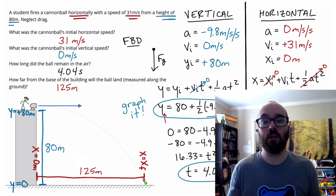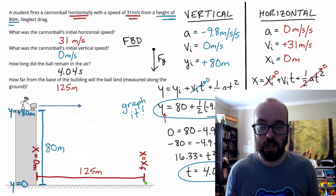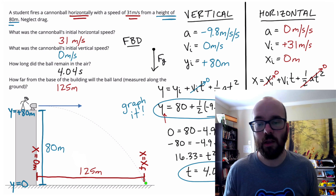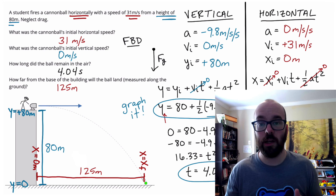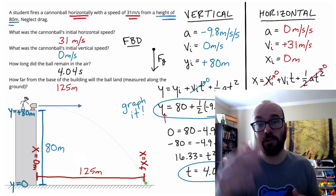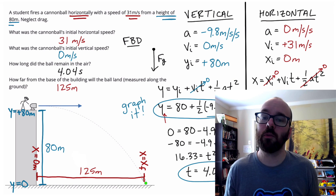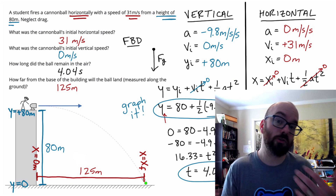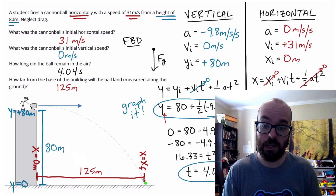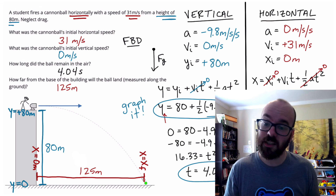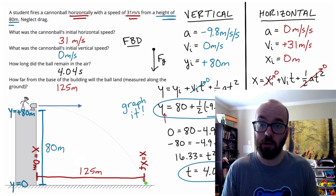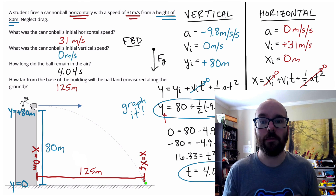That's how you solve a horizontally launched projectile problem. In the next video, we'll look at a diagonal launch, which is very similar — there's an extra trig step at the beginning, but the rest of the steps are pretty much the same. Thanks for watching, have a great day.